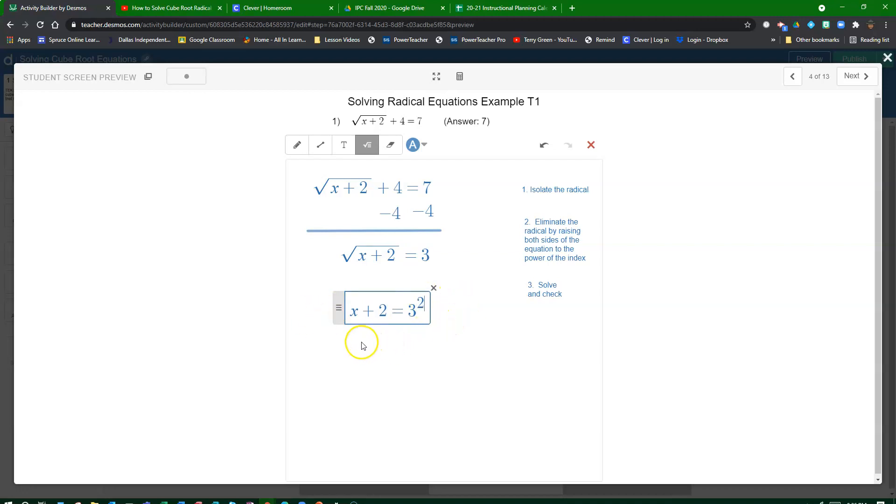That's what happens when I square both sides. And of course, let's simplify the expression. x plus 2 equals 9. So we've eliminated the radical by raising both sides of the equation to the power of the index.